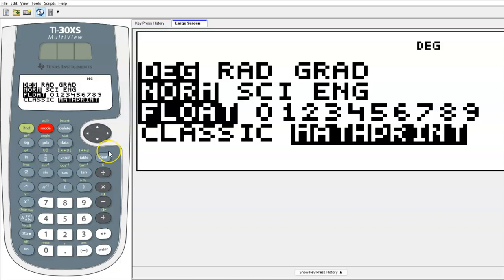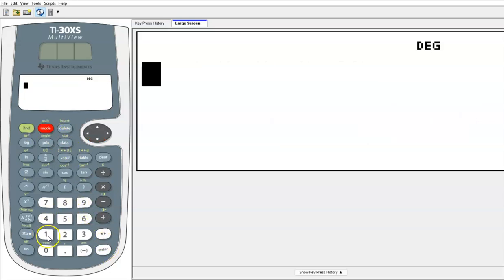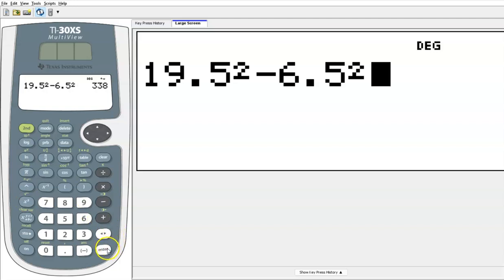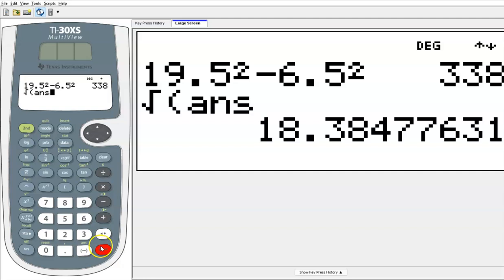So I'm coming here to mode. And I'm gonna switch this to classic and see if this fixes it. Now I'm gonna do again, 19.5 squared minus 6.5 squared. And I'm gonna take the square root. There we go. It's whatever your calculator's set to. So I got it off that math print, which is cool, but not what I wanted.